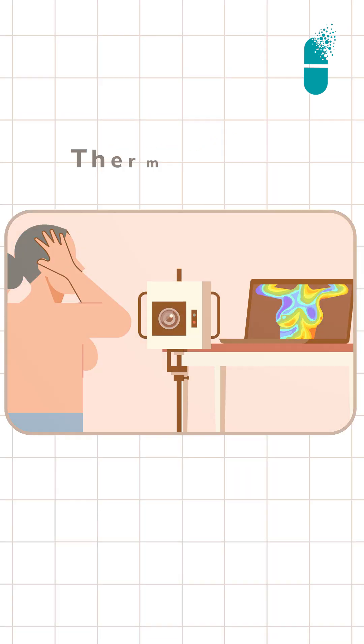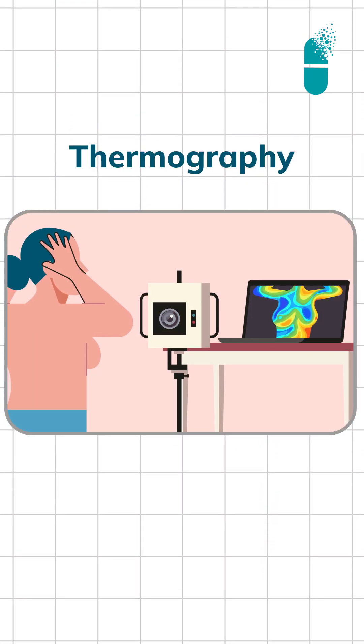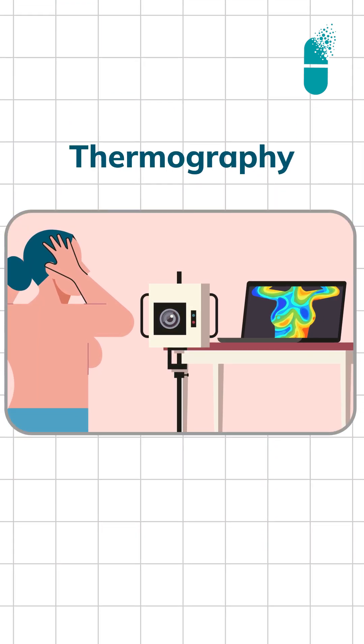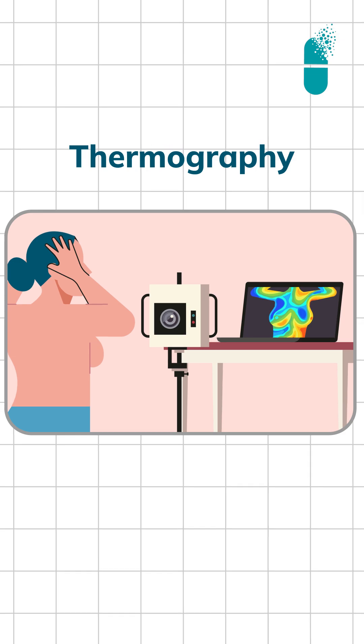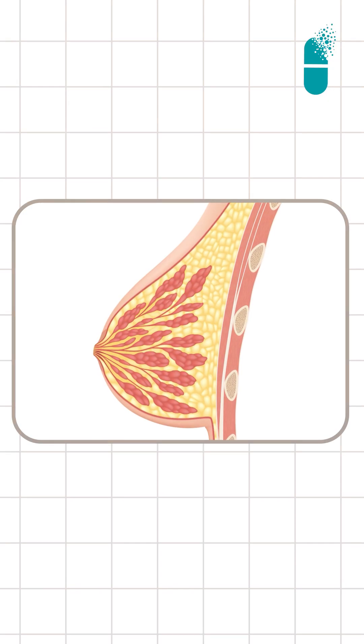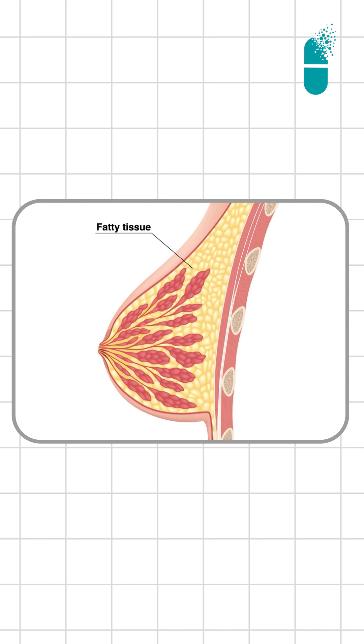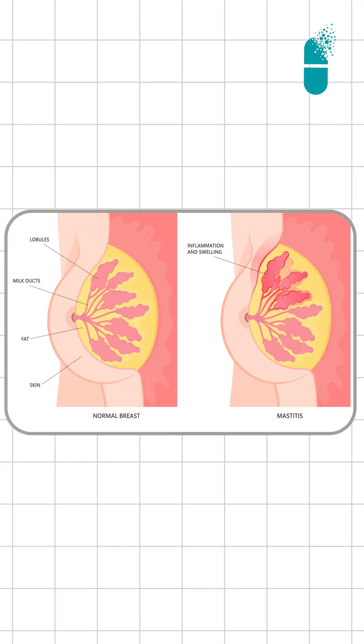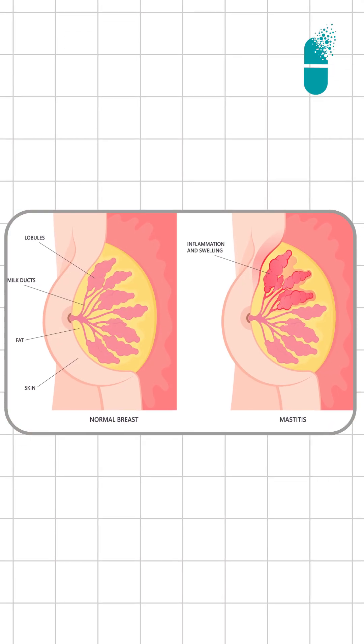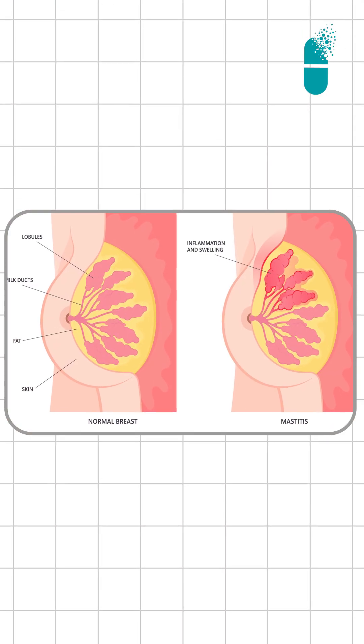Coming to thermal scan, it is just an adjuvant. It is more of an experimental modality where a particular change in the vascularity within the breast tissue is picked up using infrared cameras. Any particular area which is highly vascular — it can be secondary to inflammation or infection — those things are also picked up.